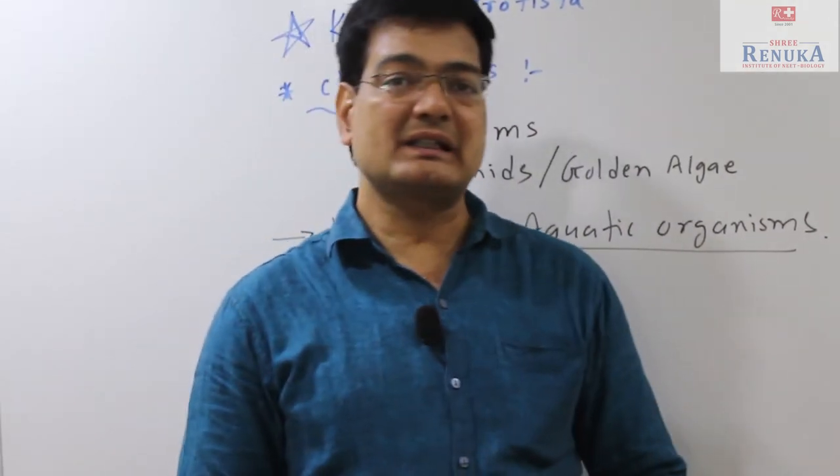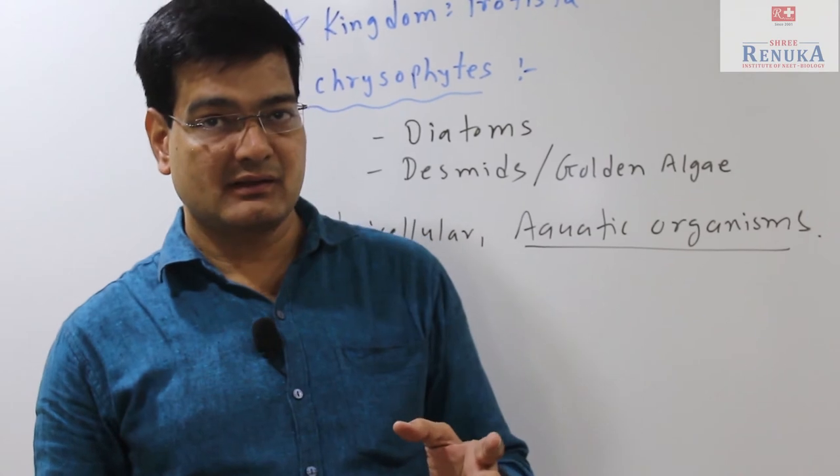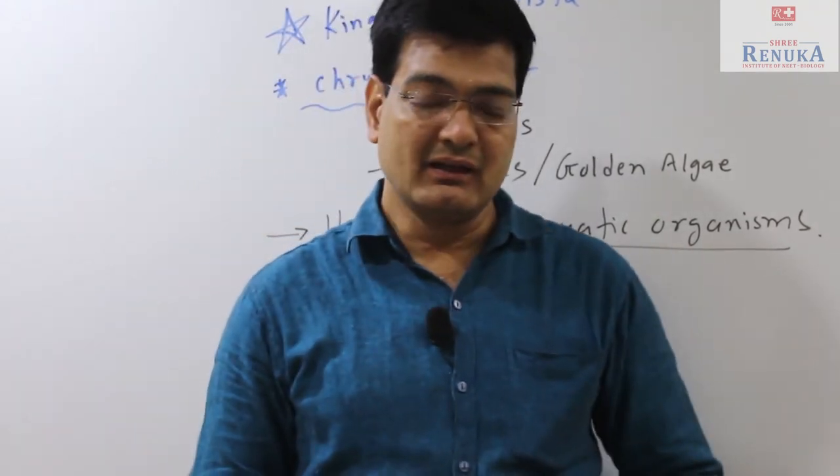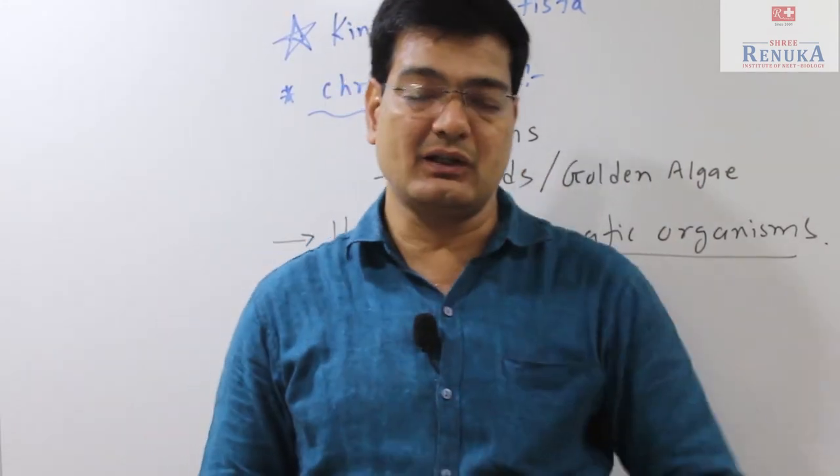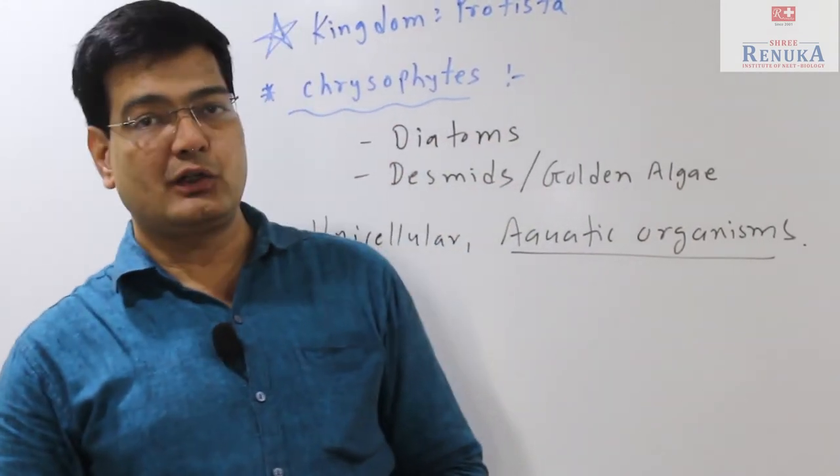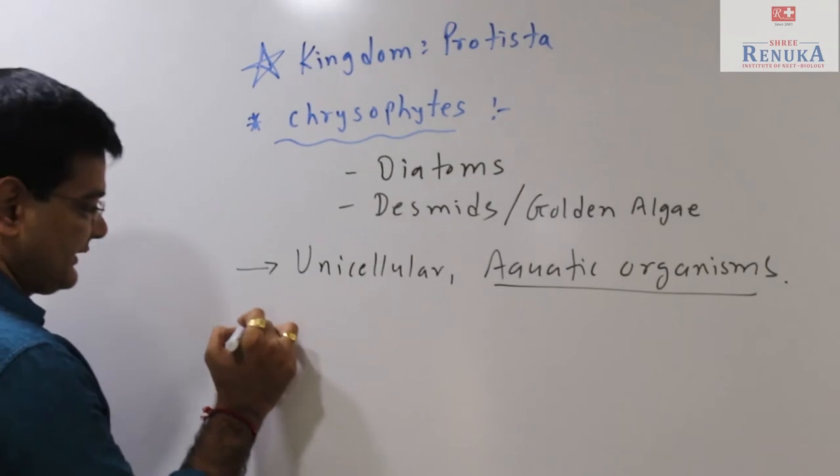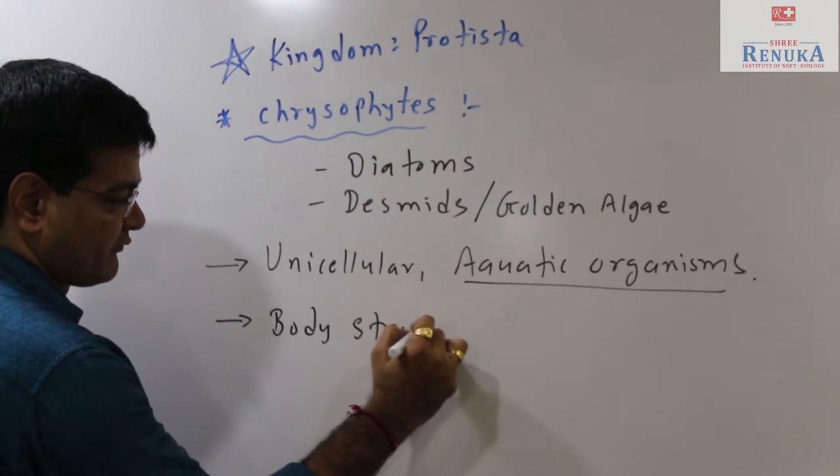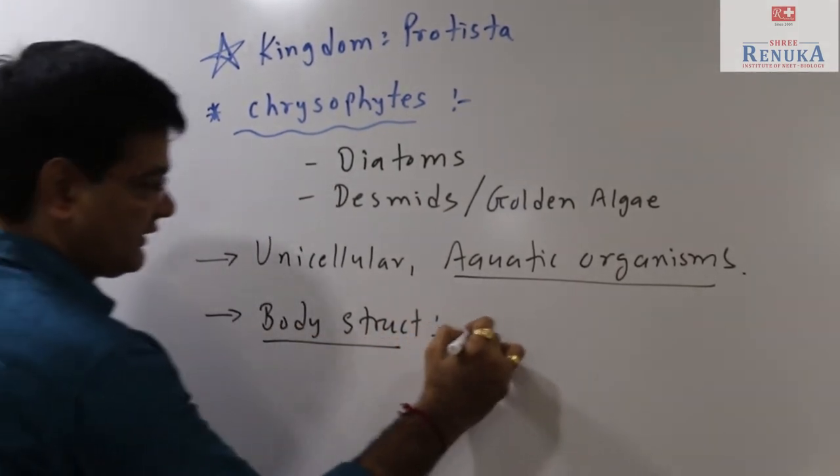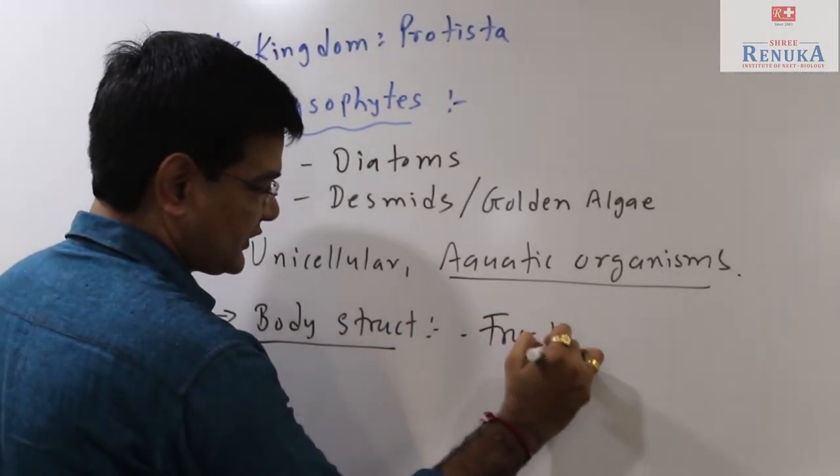Some do have cilia-like structures on the surface, and with the help of the cilia they can easily float on the surface of the water. That's why they are called phytoplankton. If you look at the body organization or body structure, that body structure is called a frustule.